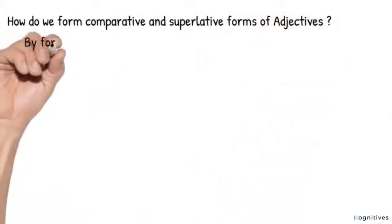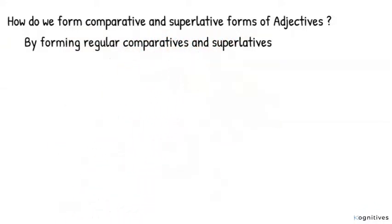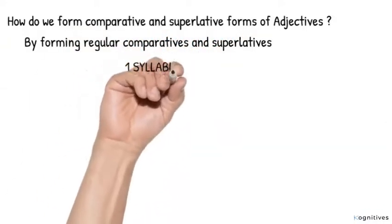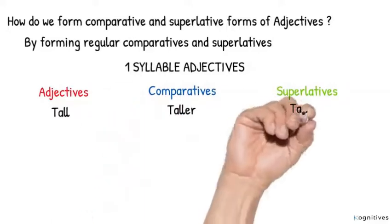But how do we form comparative and superlatives forms of adjectives? Now forming regular comparatives and superlatives. One syllable adjectives. I will have adjective, comparative and superlative. Number one: Tall, taller, tallest.